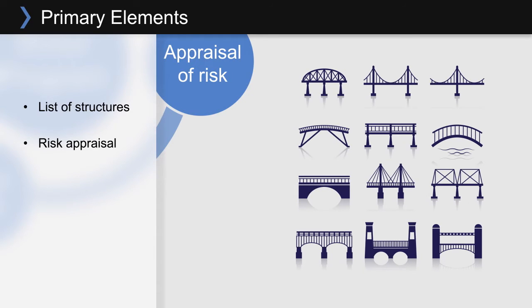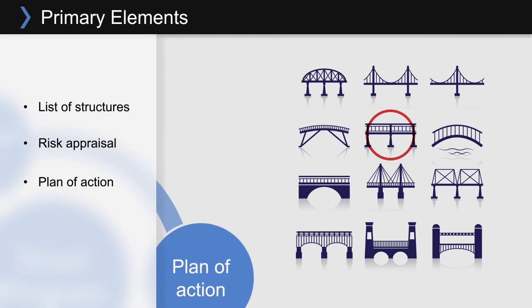For each structure identified in the risk appraisal as scour critical, the agency team develops a plan of action, which specifies the management and public safety strategy.